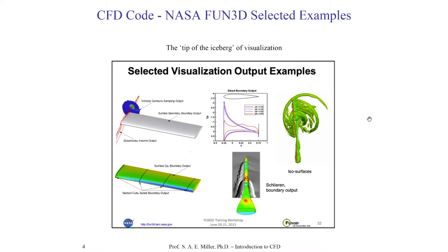On the upper left, we have a wing — they're able to show the geometry of the wing, and they're showing contours of vorticity in the cross-stream direction. They combine this plot with streamlines going over the tip of the wing. So in some plots, you can combine multiple types of visualization techniques to try and tell a story.